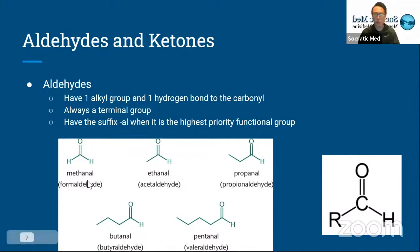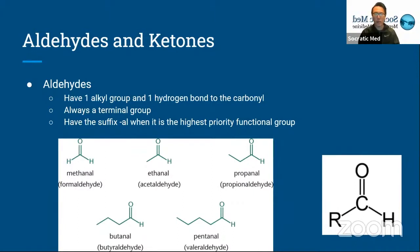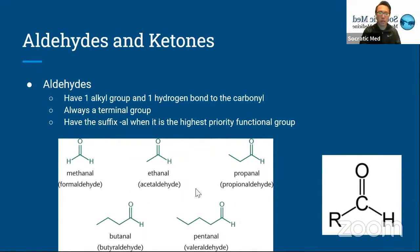Methanal is also referred to as formaldehyde, ethanal as acetaldehyde, propanal as propionaldehyde, butanal as butyraldehyde, and pentanal as valeraldehyde. Usually the first four are the ones mostly used, but be aware they can have two different names. It's helpful to know what each group looks like — how they're connected and what the alkyl group is.